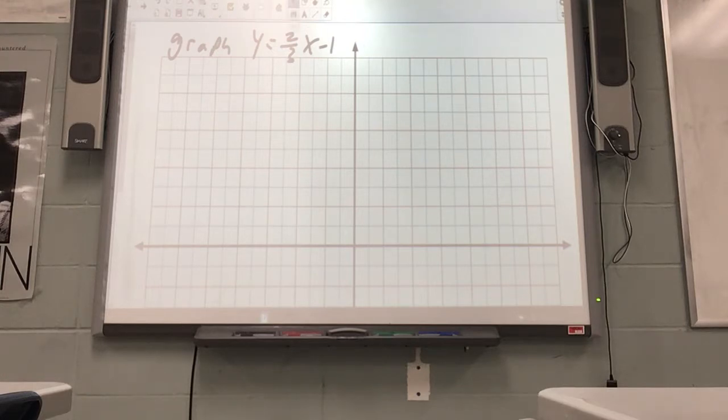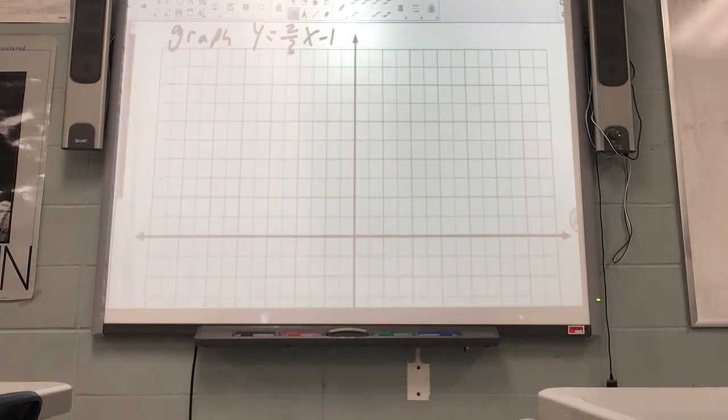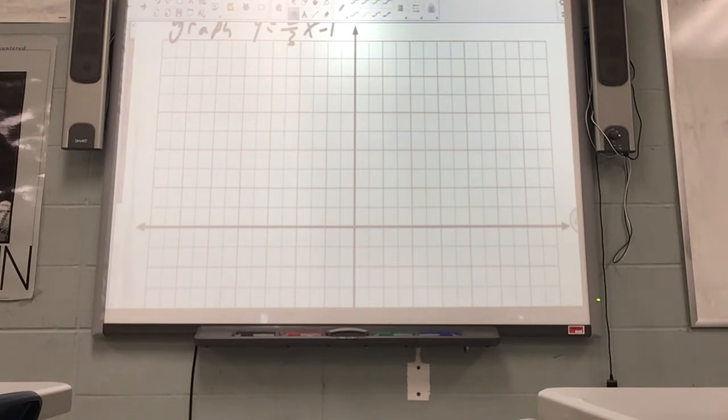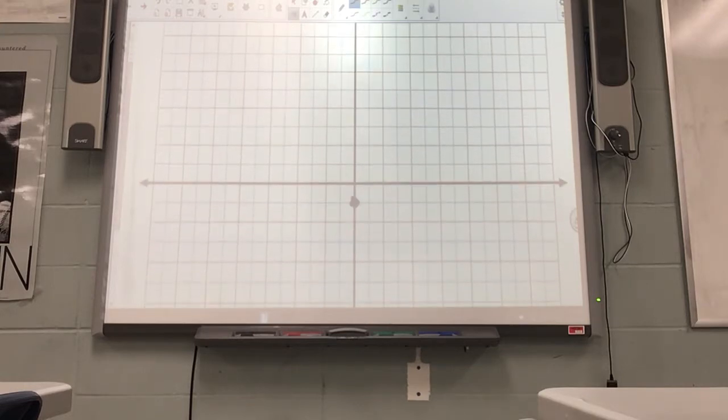Alright, so first off, to graph the line that's in slope-intercept form y equals mx plus b, the b is negative 1. So I would go down to 1 and put a dot. Then from there, its slope is 2 thirds, so I would rise 2 and run 3. And that's it. That's your line. Okay, everybody good?